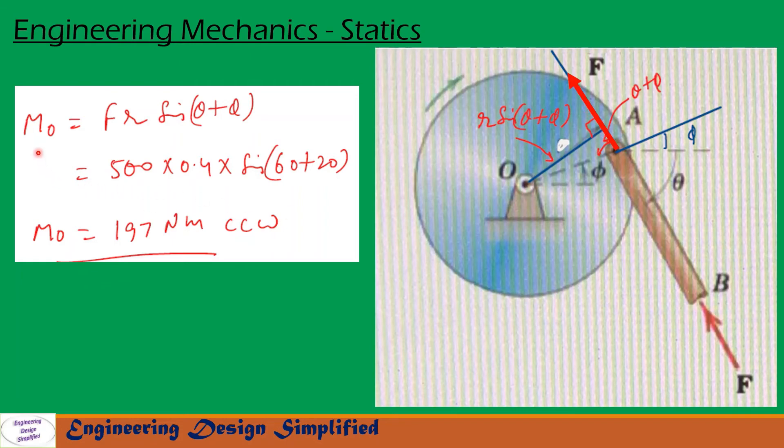Let us substitute the values: F = 500 N, r = 0.4 m, theta = 60°, and phi = 20°. After simplification, we get the moment due to F about O, Mo = 197 N·m, counterclockwise direction.